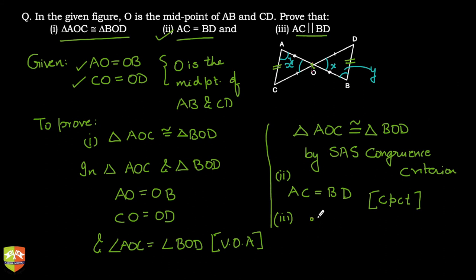So you can say since angle CAO is equal to angle DBO. If this is true, why is this true? Again because of CPCT.